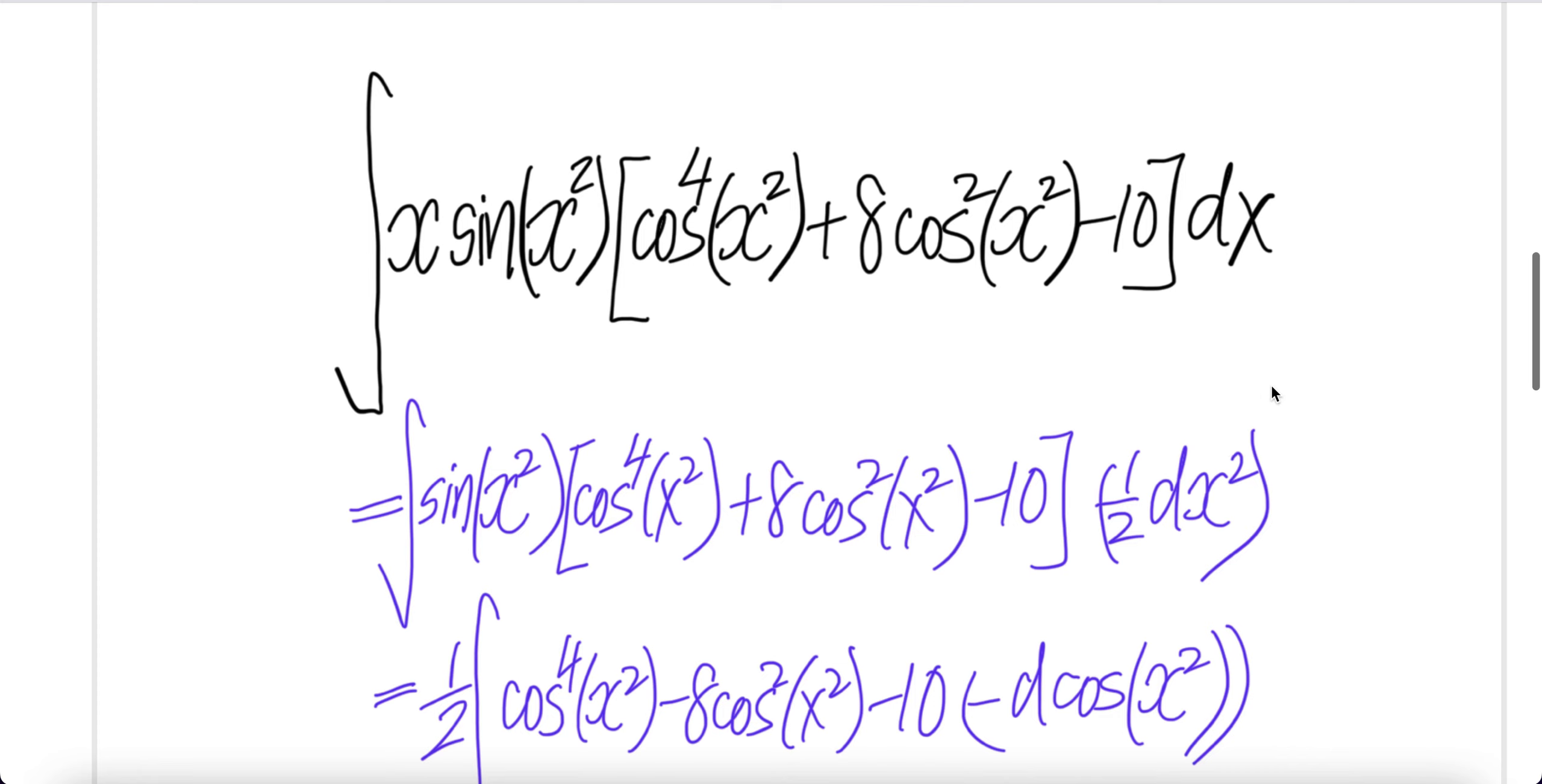The derivative of x squared is 2x dx. Two and half cancel, you get x dx. So this x dx is half dx squared. So this is the same thing.